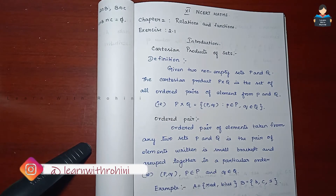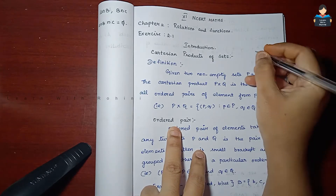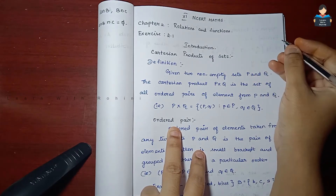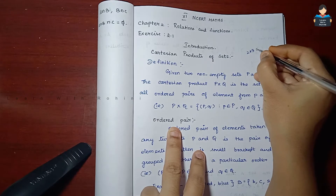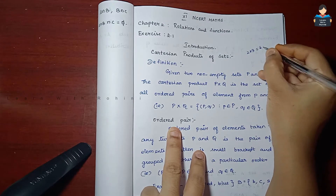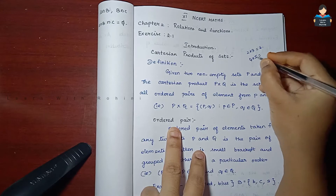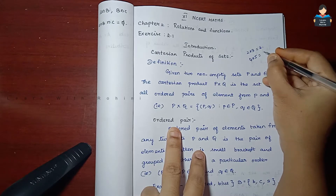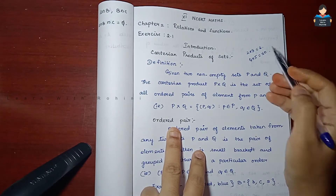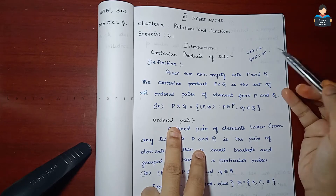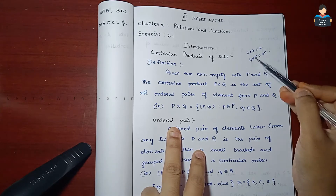In general, product of 2 and 3 we will say 2 into 3, that is 6. Product of 4 and 5 — 4 and 5 are 20. So in general we will say a number, we will say product.